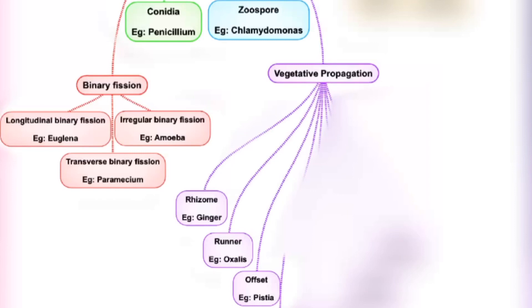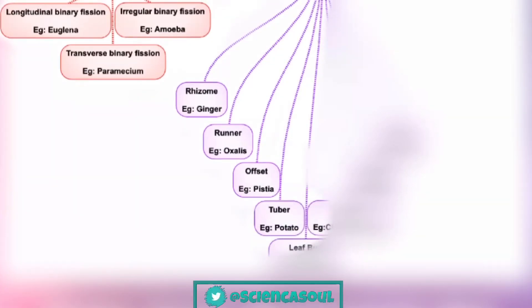Next is offset — for example, Pistia. It is a part of a branch or stem by which a plant can reproduce asexually, forming a new daughter plant. Offsets are produced by mitotic division of the main stem of the plant.